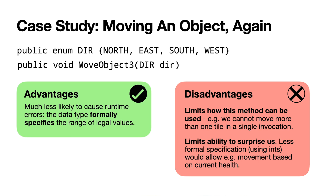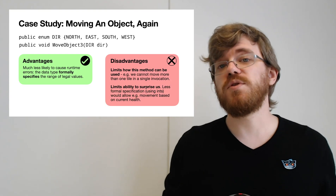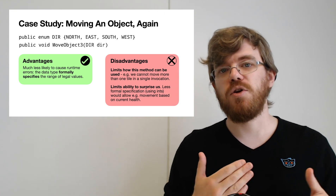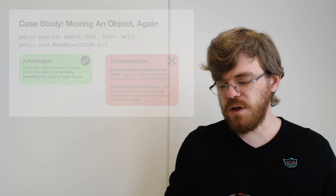But restrictions usually come with very familiar disadvantages — we're now restricting the way the method can be used. Although I gave an example where you might not want it to move more than one space at a time, if you do want to allow a dash move, you can't do that anymore. This method can only be called to move one tile at a time, and you can't even move diagonally in this example. It also limits the ability to surprise us — our system might have invented a cool ability where we pass in the player's speed statistic as the argument to the move function, but we can't do that anymore because we've restricted the type that can be passed.